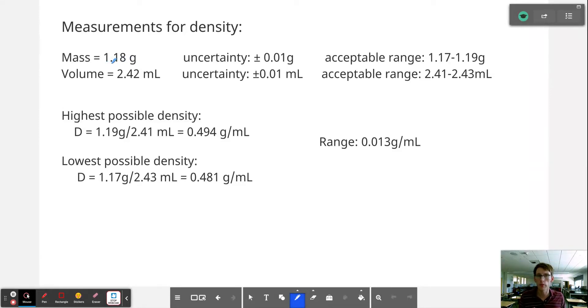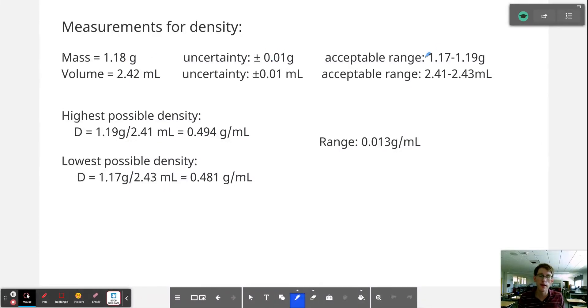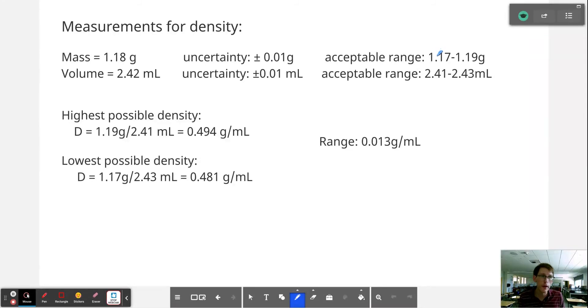Well, let's say that we get 1.18 grams on this more precise balance. Our uncertainty is plus or minus 0.01 grams, which means that our true measurement has to be somewhere between 1.17 and 1.19 grams, which is really, really narrow.